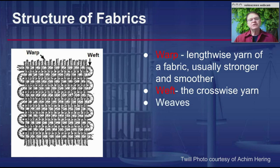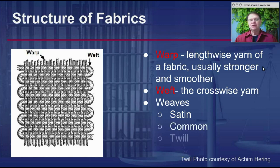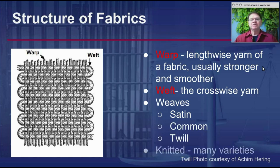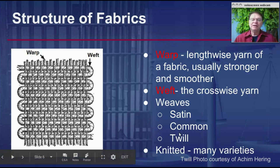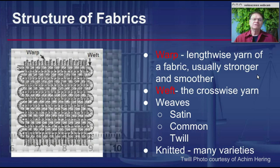There are also a variety of different weaves. The one pictured here is known as a common weave, but there's also satin and twill. Warp and weft are the two key terms when referencing the structure of a fabric. Keep in mind there are also knitted garments — many athletic garments are knitted and won't fit into any of these three weave patterns.